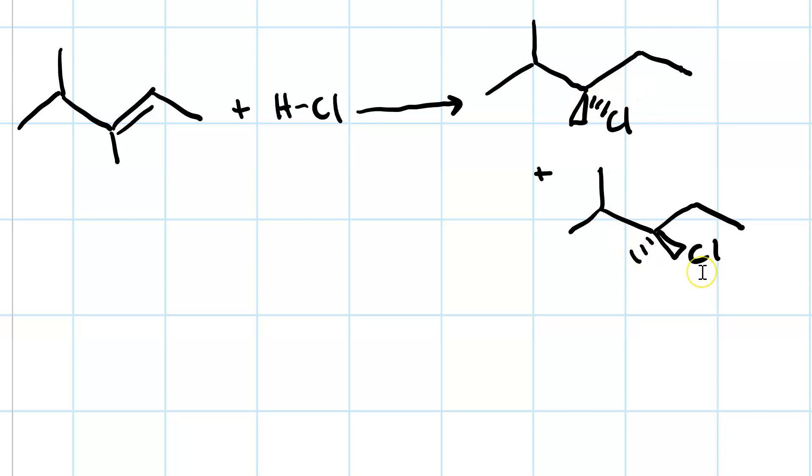I will get a racemic mixture, 50% of each of these enantiomers. In other words, 50% of the R isomer here, and 50% of the S isomer here.